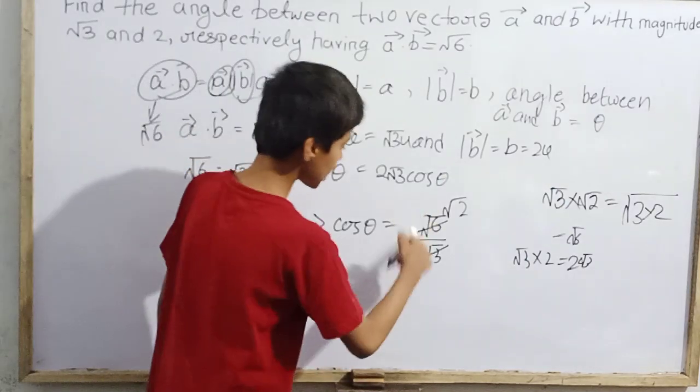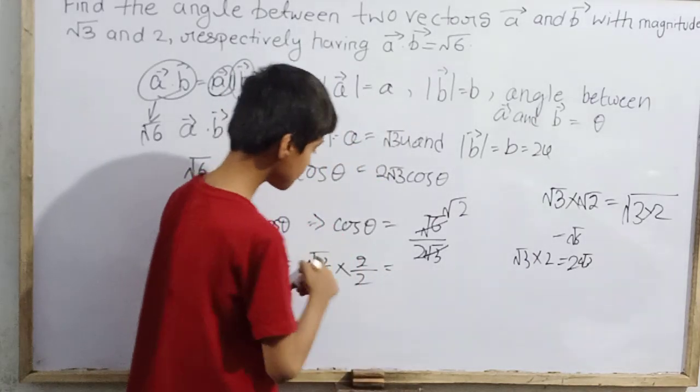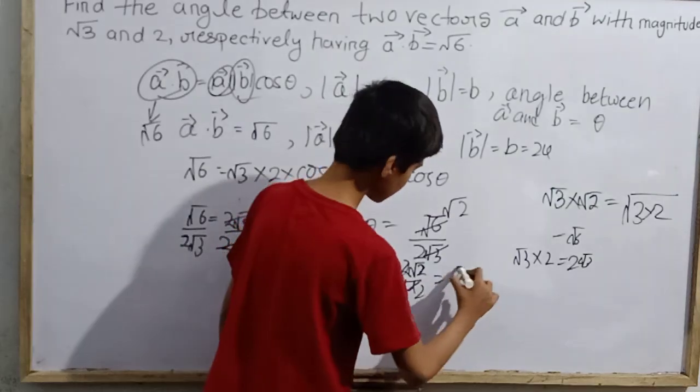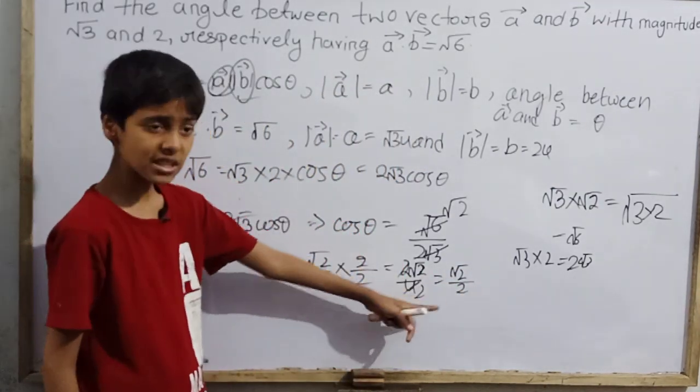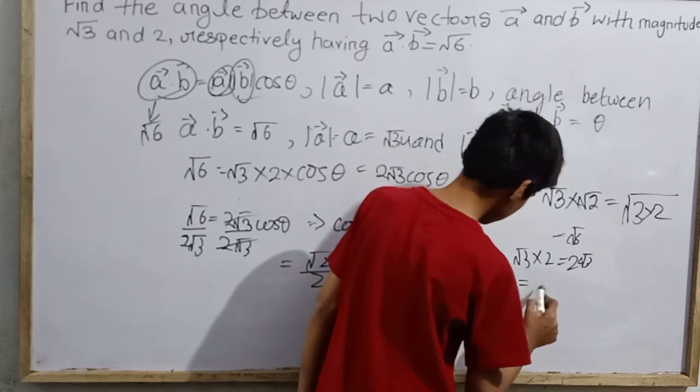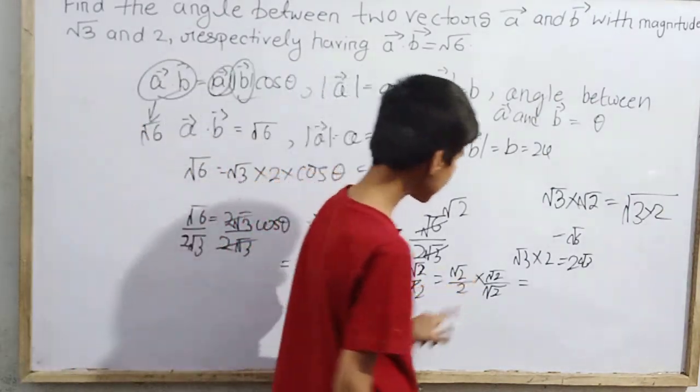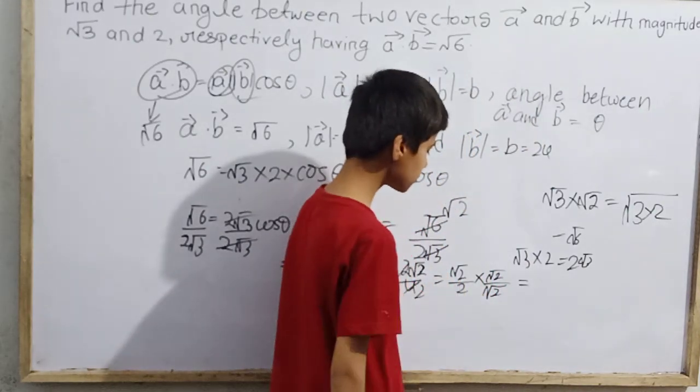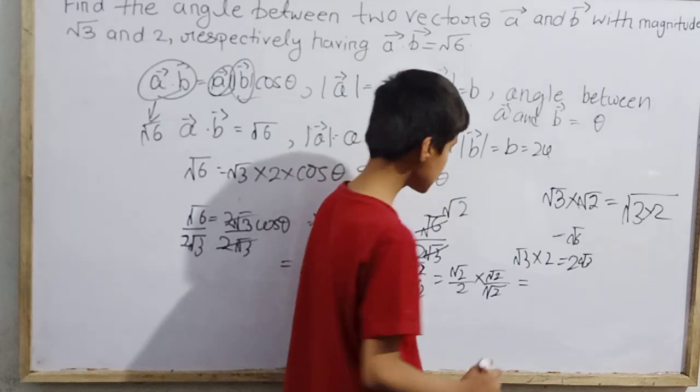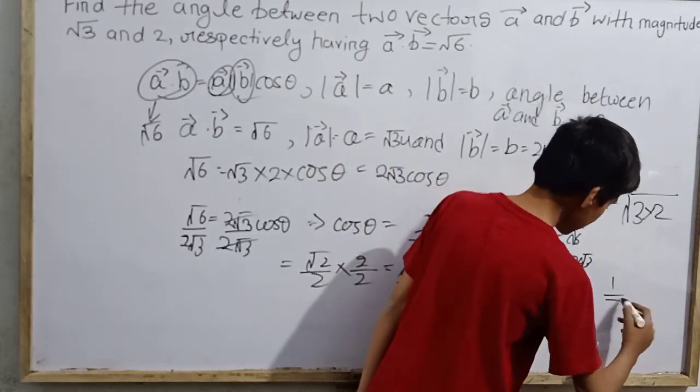We are dividing by root 2. Here put root 2 upon 2, multiply up and down. Root 2 into root 2 is what? Root 2 over 2. 2 into 2 is 4, root 2 over 2 is 2 root 2. 2 and 2 cancel. This is 1 by root 2. Let's do rationalization. Root 2 upon root 2. Root 2 into root 2 is 2. 2 and 2 cancel. This is 1 by root 2.